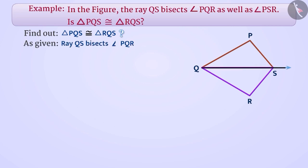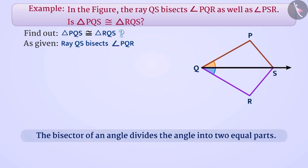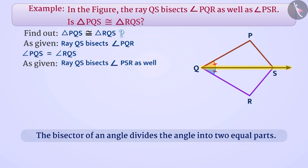We have been given that ray QS bisects angle PQR. We know that the bisector of an angle divides the angle into two equal parts. Therefore, angle PQS is equal to angle RQS. Similarly, ray QS also bisects angle PSR, so angle RSQ is equal to angle PSQ.